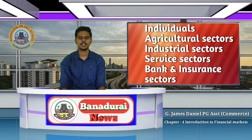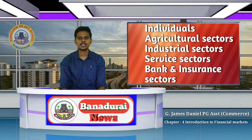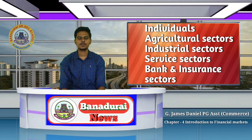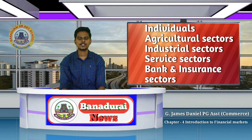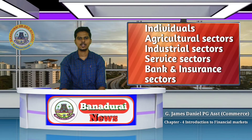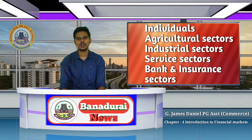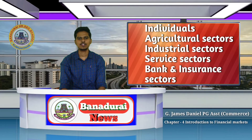Individuals and sectors use the financial market. For example, the agricultural sector: if the agricultural sector needs funds, they will invest in buying a tractor or equipment. So the agricultural sector is working with the financial market.